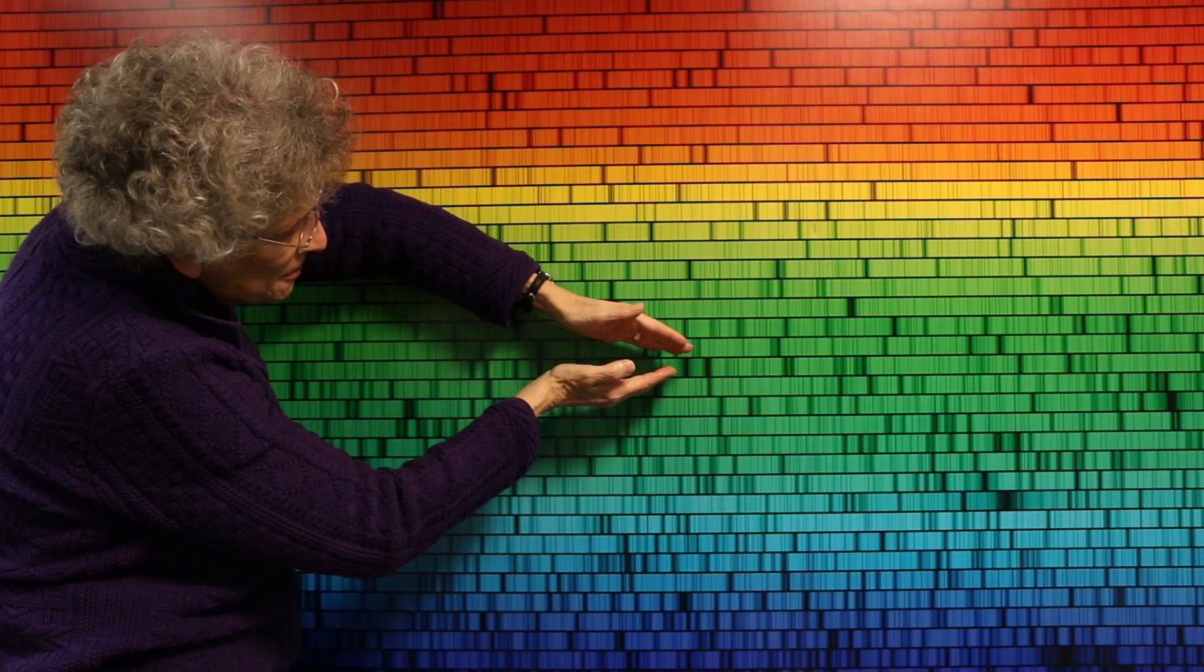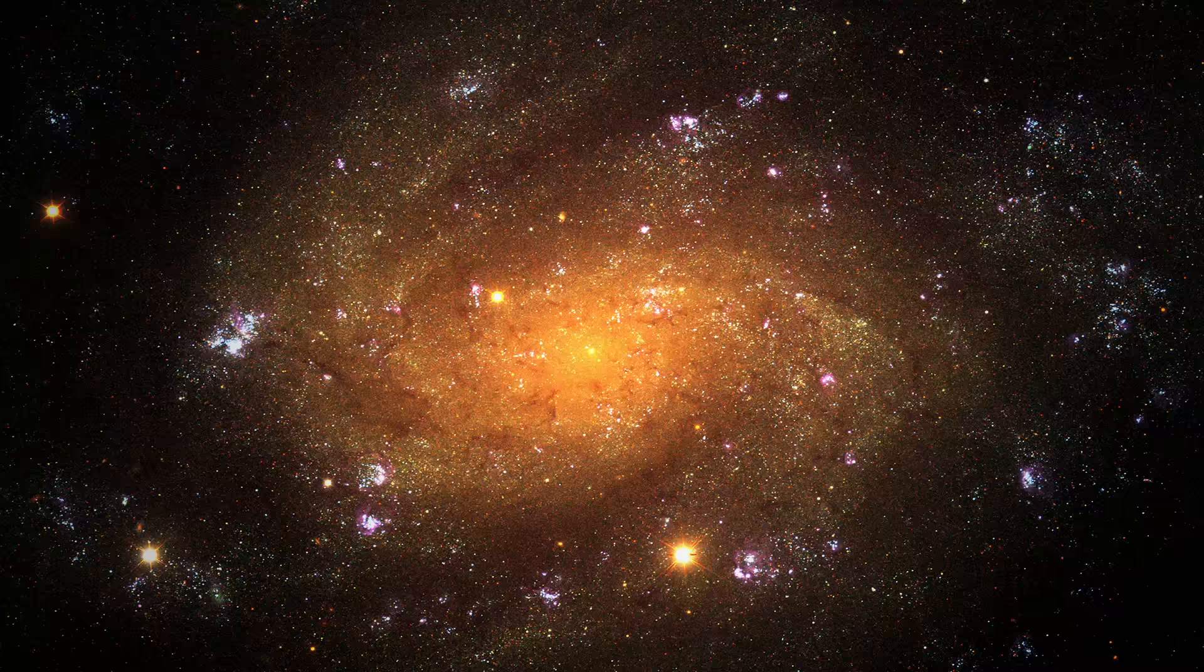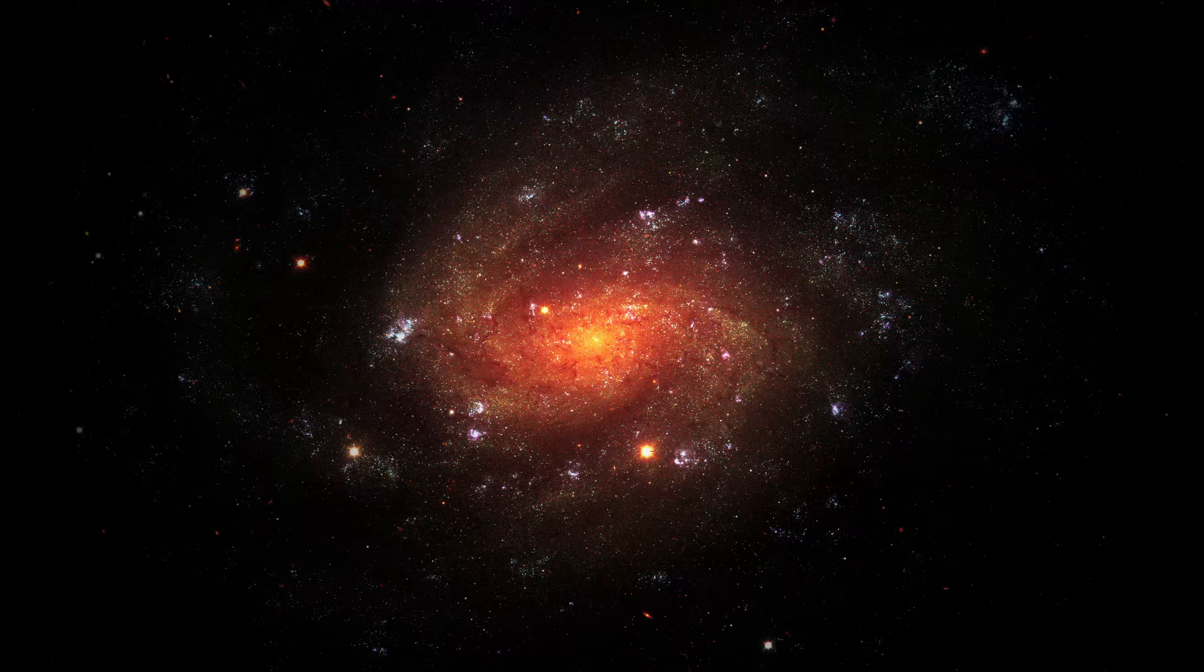And we do that by spreading the light of a galaxy out into its colors. Then we can see features that tell us how rapidly it appears to move away from us. The faster a galaxy's moving away, the more we see its light getting stretched towards longer wavelengths, and the larger the redshift. That's proportional to the distance, so that's how we know how far away a galaxy is.